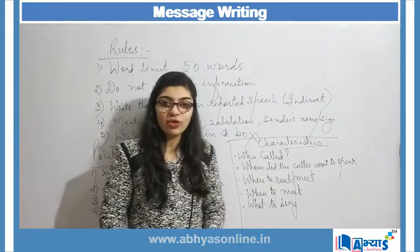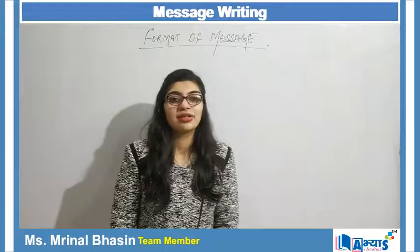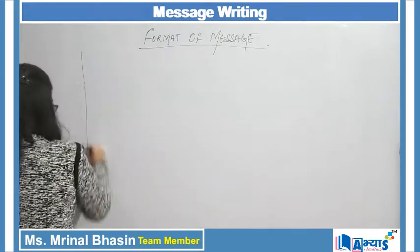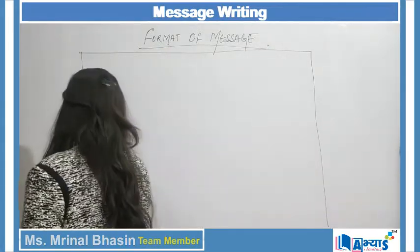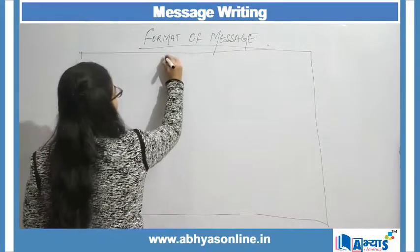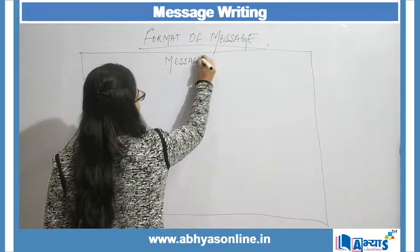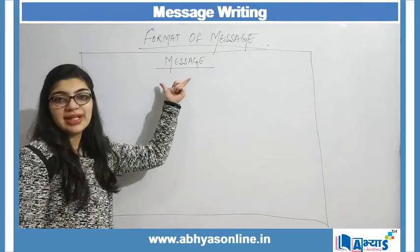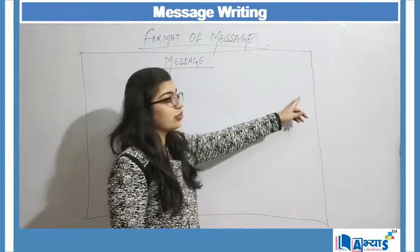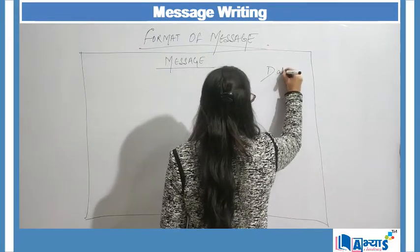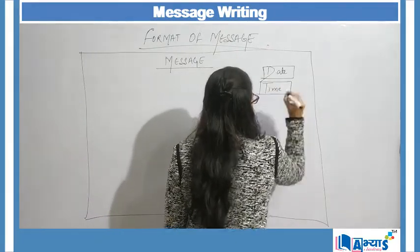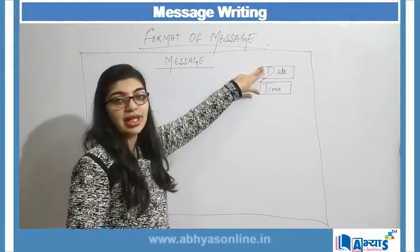Now let us understand the format of the message. The message should always be within a box, so I will first make my box. Once the box is made, I will begin by writing 'Message' on the top center and underline it. Then in the top right corner I will mention the date, and below the date I will mention the time — without leaving a line between them.